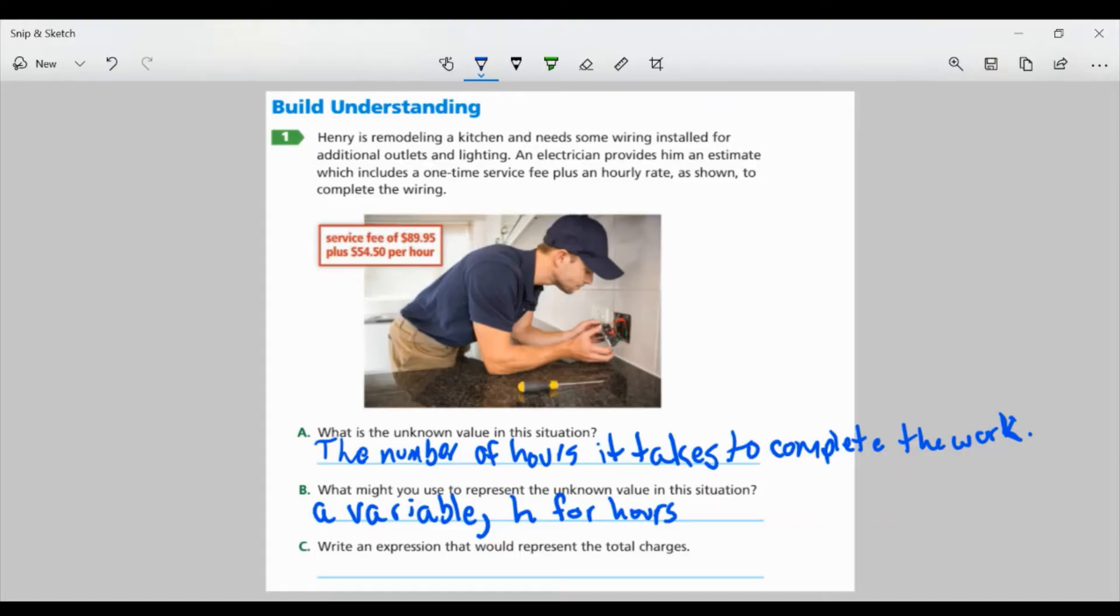Part C, write an expression that would represent the total charges. Well, I know it's $89.95 plus $54.50 for every hour. So times hours, right? However many hours there are, I plug it in for H and multiply it to $54.50. Now we can use this or you can have the $54.50 times H in the front. Either one is fine. They're equivalent. However, the most common one is going to be this one here.